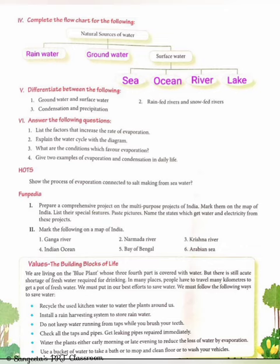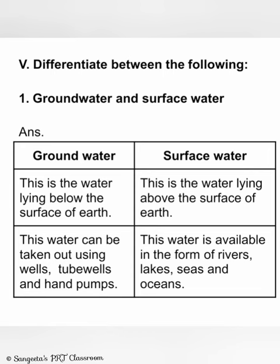Part 5 — Differentiate between groundwater and surface water. Groundwater is the water lying below the surface of earth; surface water is the water lying above the surface of earth. Groundwater can be taken out using wells, tube wells and hand pumps; surface water is available in the form of rivers, lakes, seas and oceans.